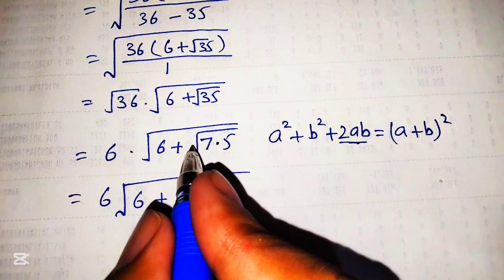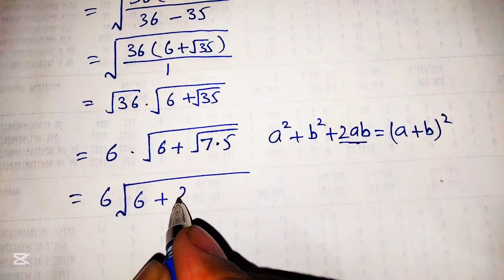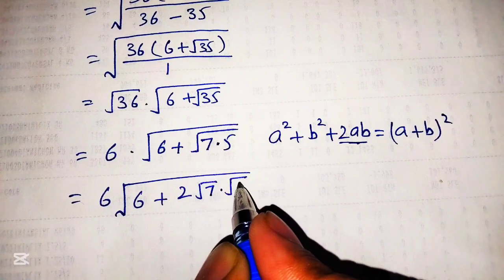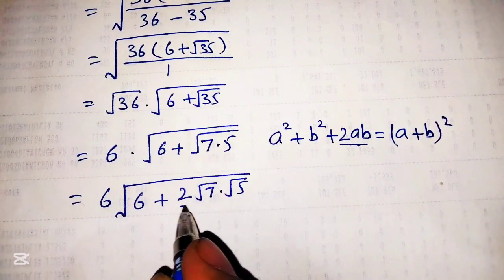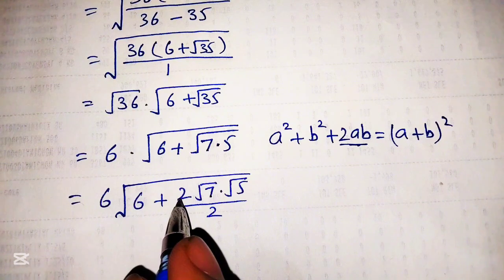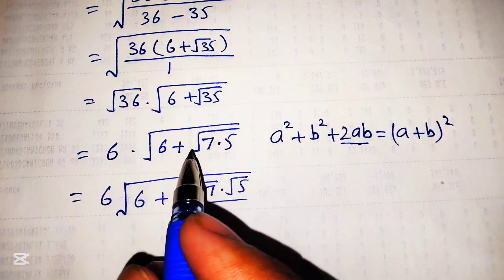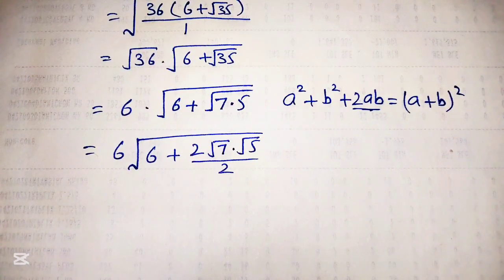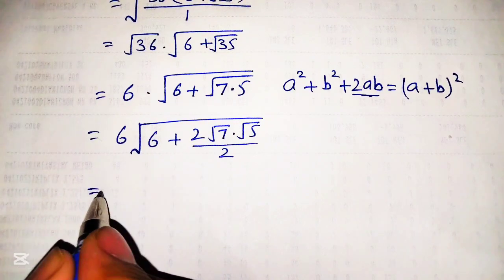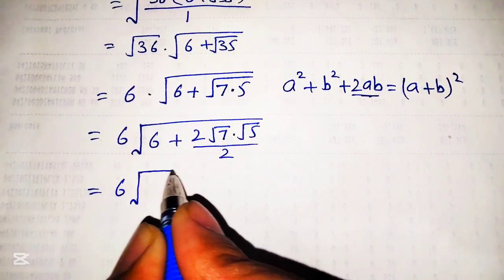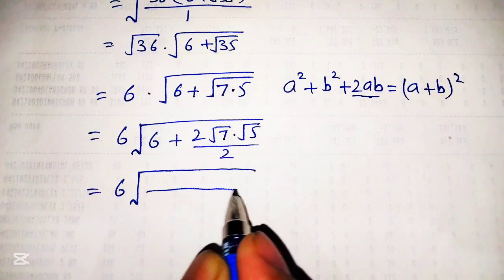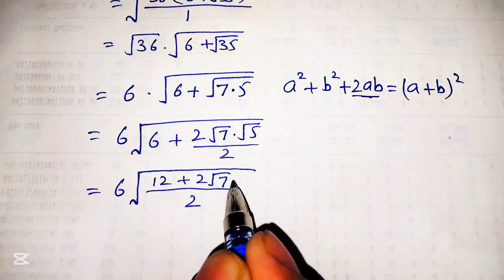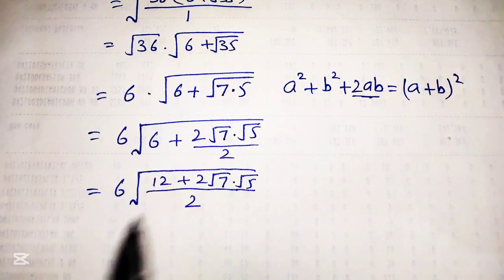For this, we will multiply and divide by 2. So, 2 times, and separating the square root of 7 and 5: 2 times square root of 7 times square root of 5 over 2. This 2 cancels with this 2 and we get the same term again. Now taking LCM, we get 2 as the LCM, and 2 times 6 equals 12, plus 2 times square root of 7 times square root of 5.